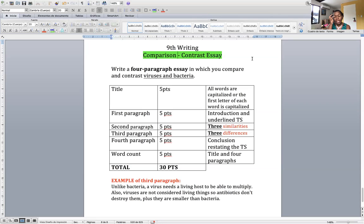Here's an example of the third paragraph. This is the paragraph in which you're gonna list three differences. Unlike bacteria, a virus needs a living host to be able to multiply. Also, viruses are not considered living things so antibiotics don't destroy them. Plus, they are smaller than bacteria. In this one paragraph I listed the three differences. Notice I did not write number one, number two, number three. No, you just allow it to flow like a paragraph. The first difference is that a virus needs a living host. The second difference is that antibiotics don't kill viruses. And the third difference is that viruses are smaller than bacteria. Okay, that's what I'm looking for.